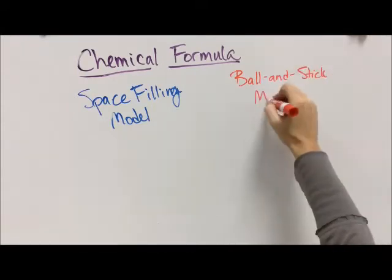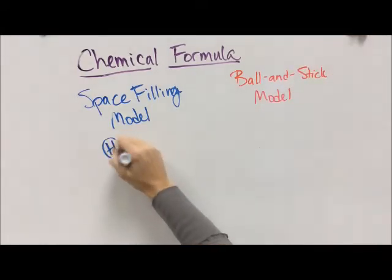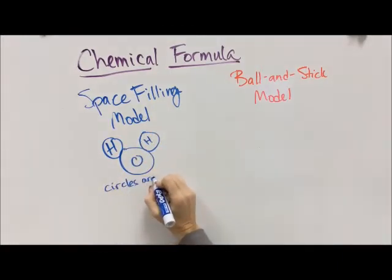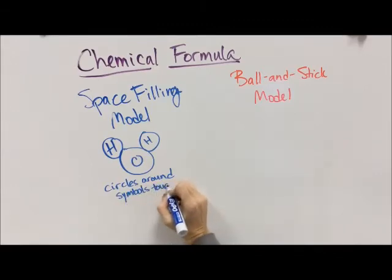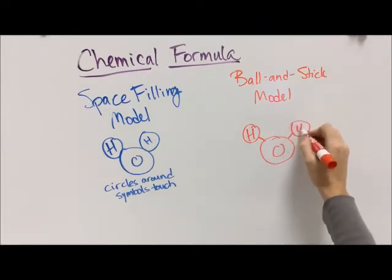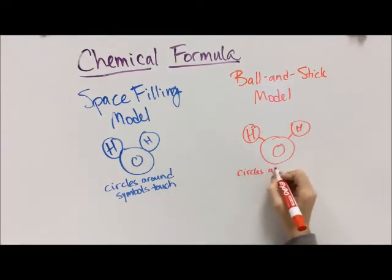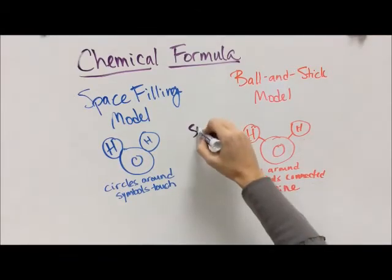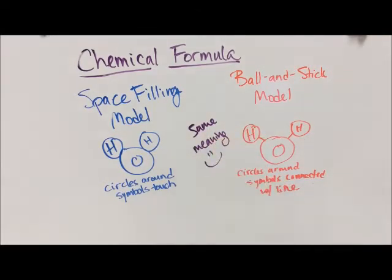There are a couple of ways to represent chemical formulas visually. The space-filling model shows circles around each atomic symbol, and they touch each other. The ball-and-stick model also has circles around symbols but connects them with lines to separate the atoms more clearly. Both have the exact same meaning — they both represent two hydrogens and one oxygen stuck together in a water molecule.